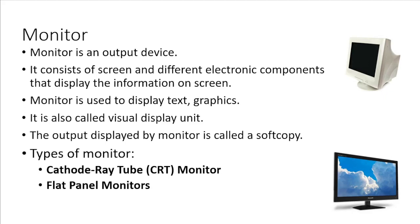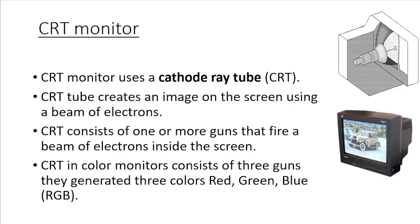Different types of monitors are cathode ray tube monitors and flat panel monitors. First of all we will discuss about CRT monitors. CRT monitors use a cathode ray tube, or CRT.